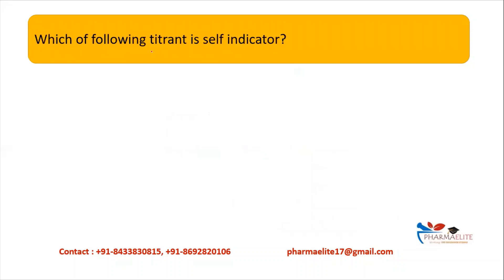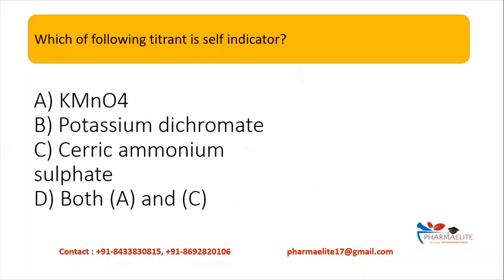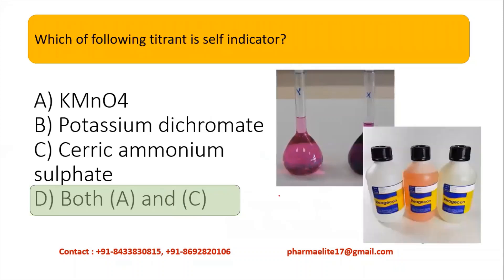Now let's solve a question: Which of the following titrants is a self-indicator? Options: A) KMnO₄, B) Potassium dichromate, C) Ceric ammonium sulfate, D) Both A and C. The answer is D — both A and C. Potassium permanganate and ceric ammonium sulfate both have their own color, so there is no need to add a separate indicator. The titrant itself acts as the indicator, so these are called self-indicators.